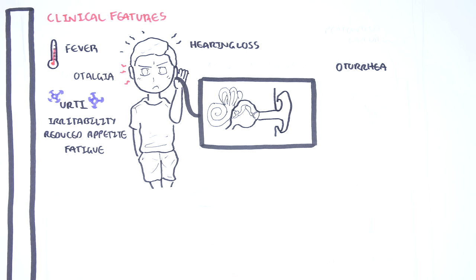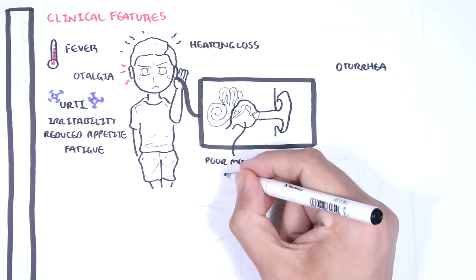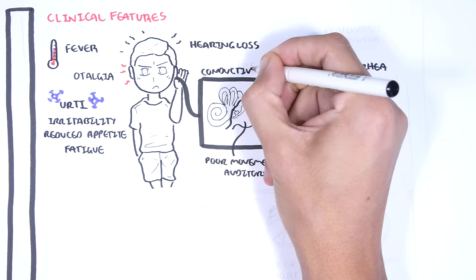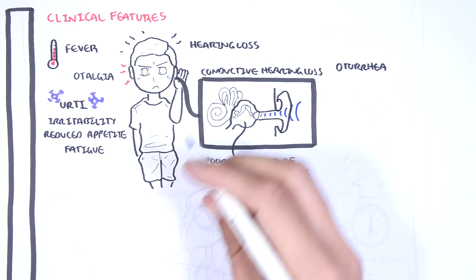Otitis media with effusion is usually asymptomatic, as explained previously, and typically follows an episode of acute otitis media. Hearing loss is the other main complaint. Hearing loss occurs because the tympanic membrane and auditory ossicles are unable to move as effectively in an environment full of fluid and inflammation. Hence, in the presence of an effusion, there can be a conductive hearing loss rather than a sensory neural hearing loss.